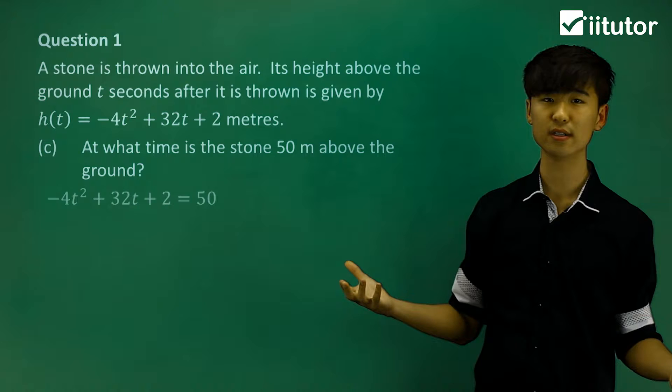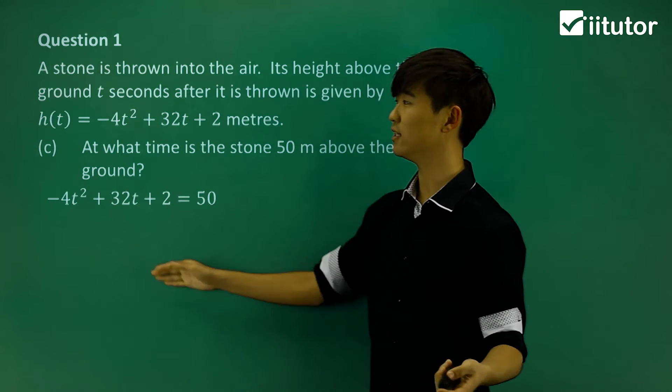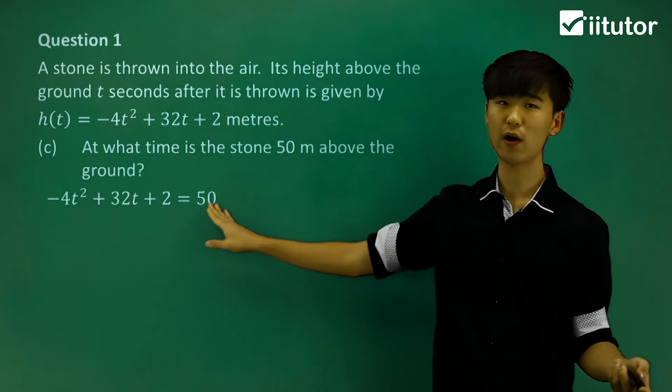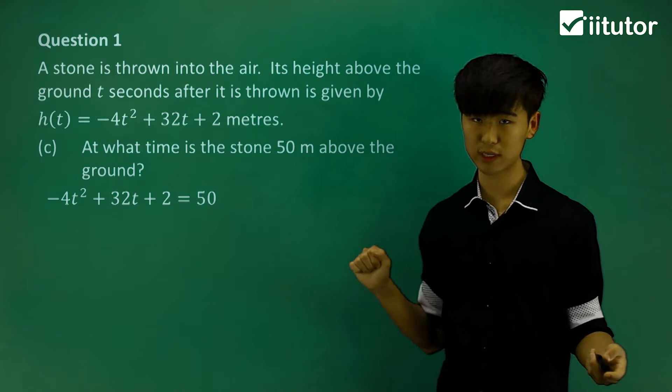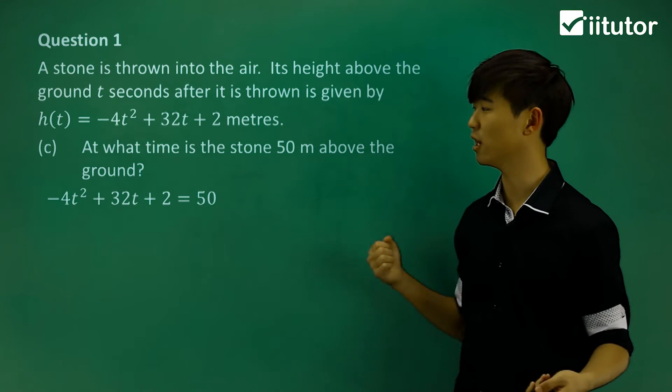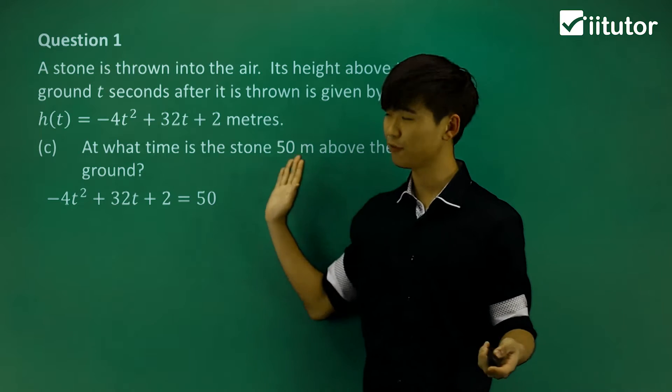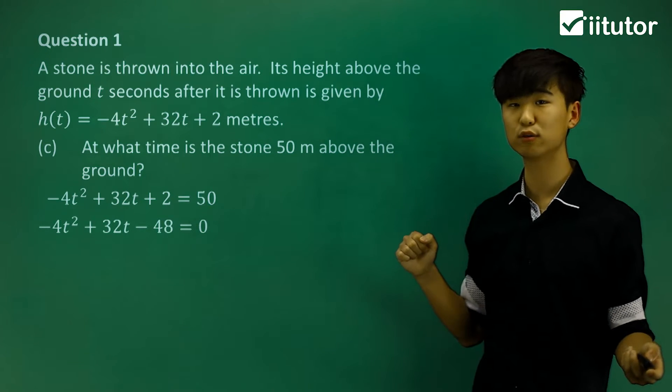The height is 50, so we set h = 50 in our equation and solve for t. We move 50 to the other side to make it equal to 0.